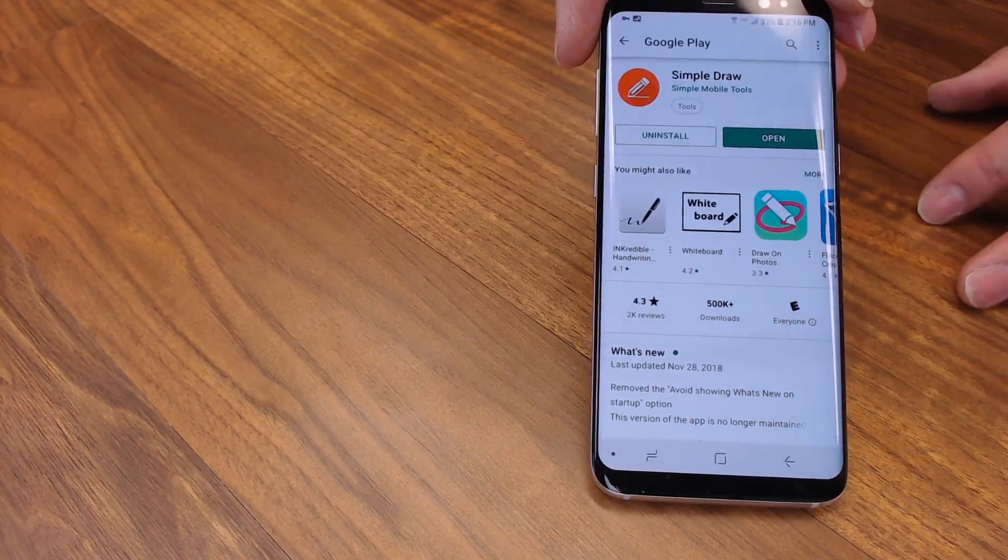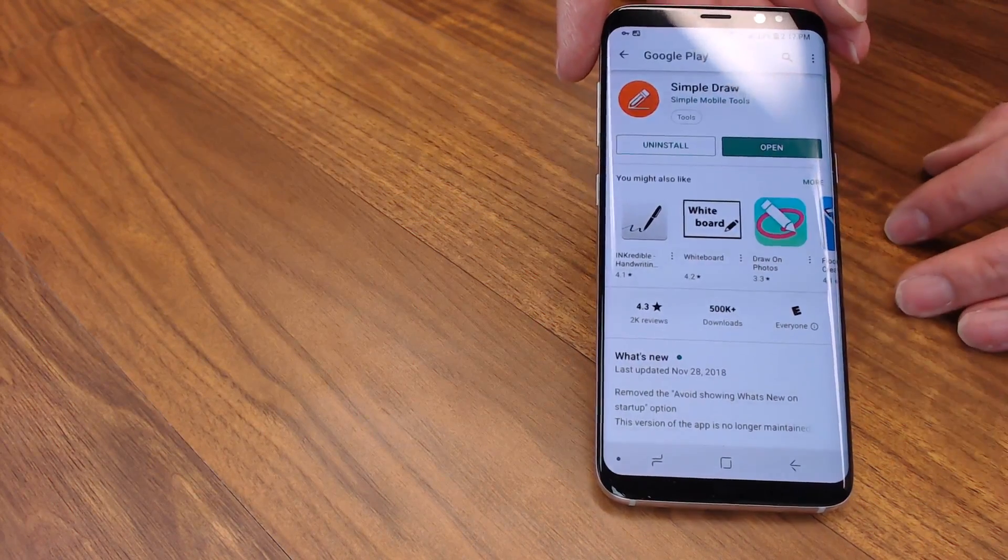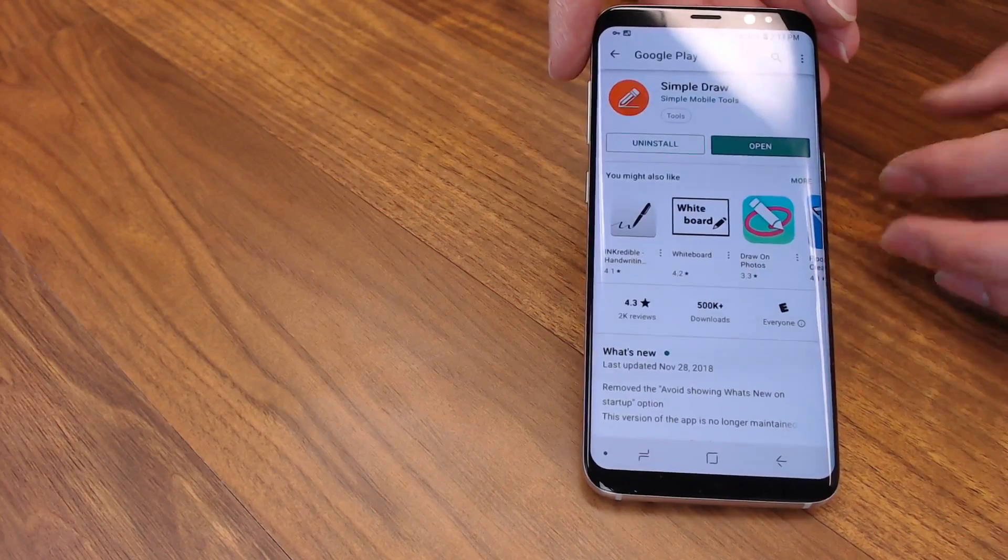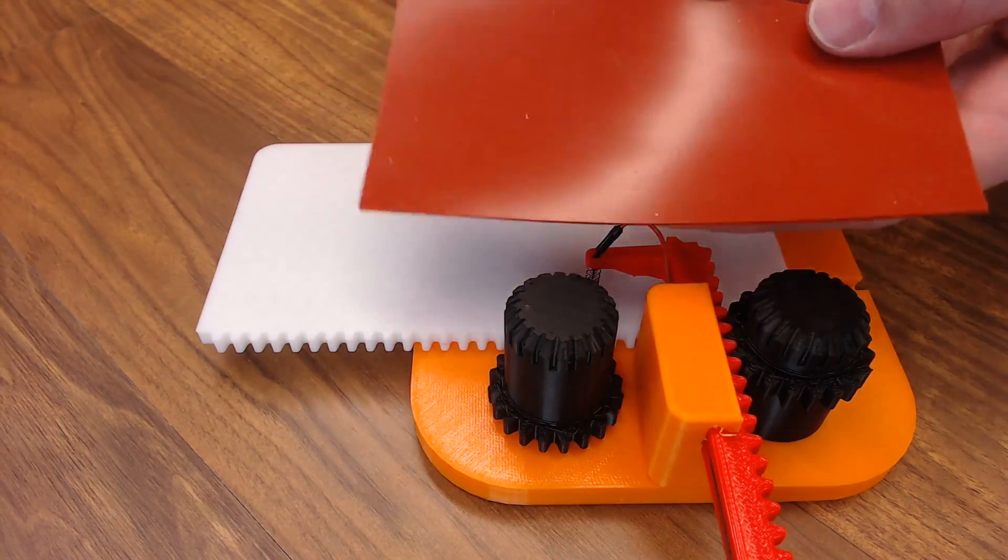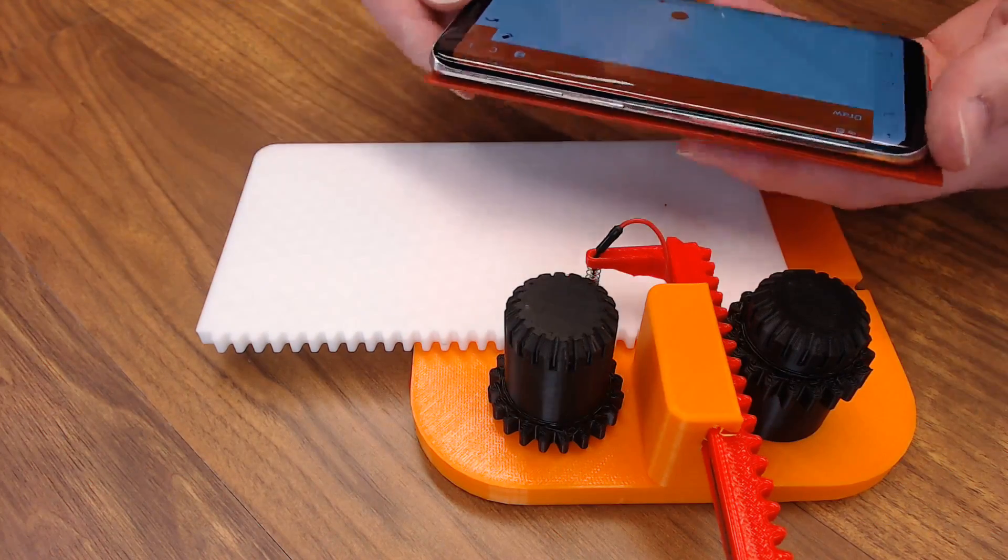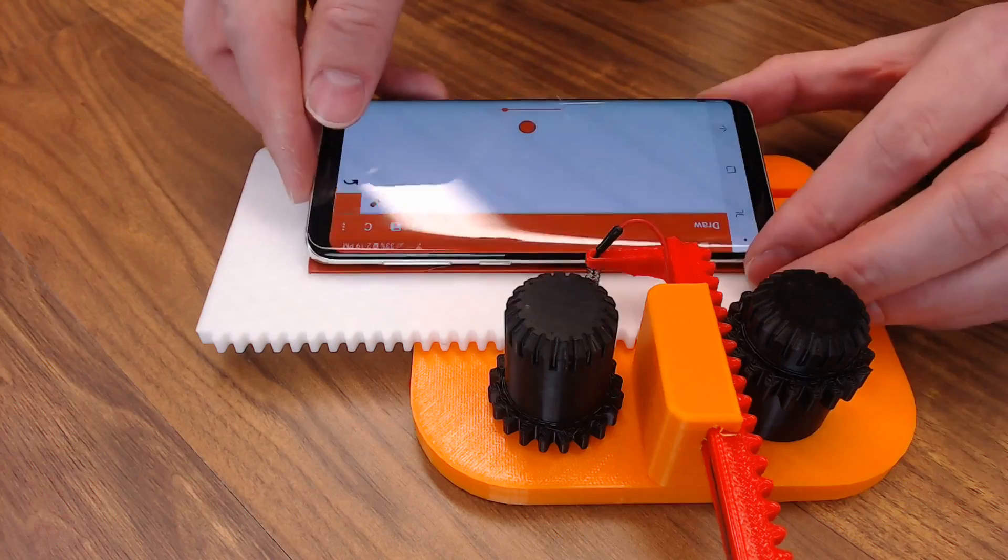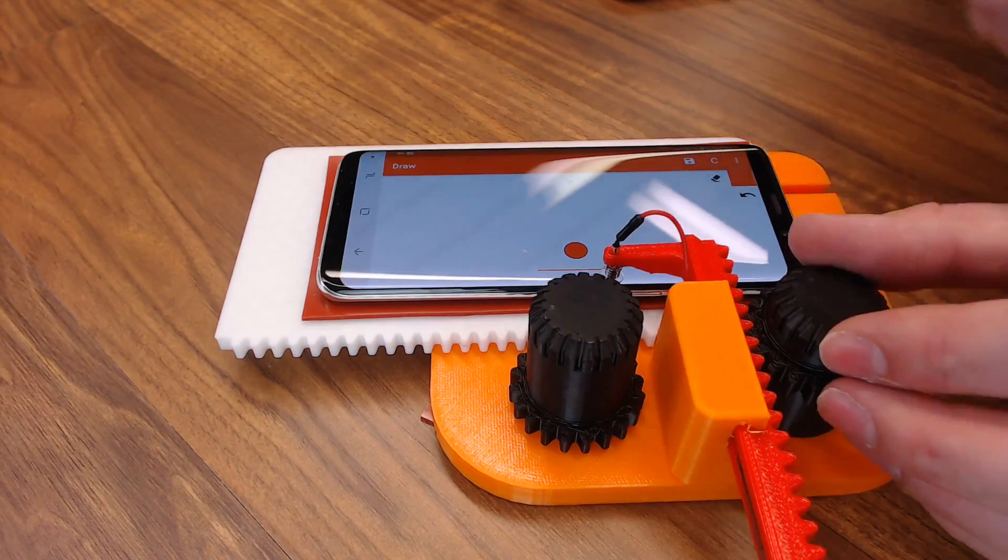And Ali suggests you use a program called Simple Draw. I believe it's available for Android and iOS. It seems to work just fine on Android. It's a real quick download. I got it from the Play Store. So we'll open that up. And your larger piece of silicone sheet, you can just put your cell phone on that and slide the whole thing onto the X rack. You'll have to lift up your stylus just a little bit to get it started.